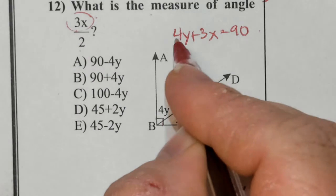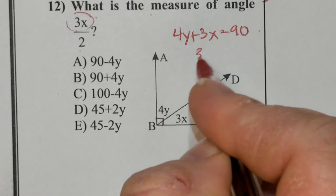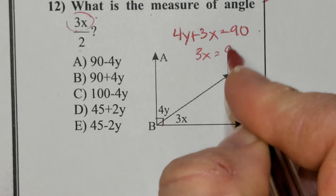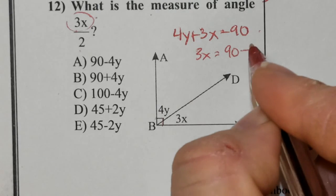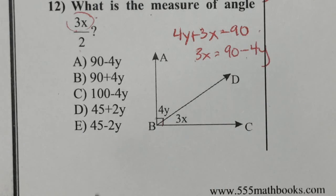I'm going to start by taking 4y and moving it to the opposite side. It's currently positive. To move it over, I do the opposite operation, so subtract. And now I have 3x by itself.